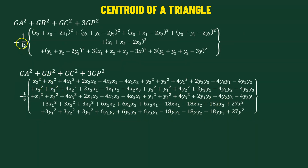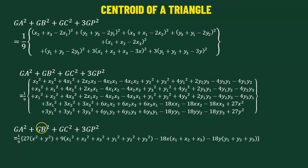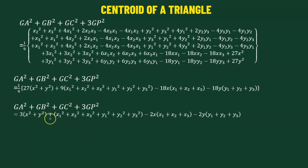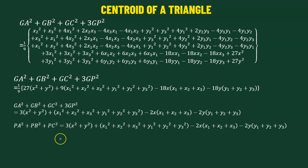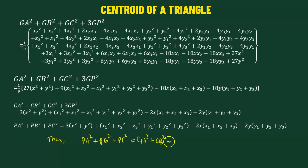After combining all like terms and dividing each term by 9, we get the expression: 3(x² + y² + x1² + x2² + x3² + y1² + y2² + y3²) − 2x(x1 + x2 + x3) − 2y(y1 + y2 + y3). This is the same expression we obtained for the left-hand side — PA² + PB² + PC². Thus we can say PA² + PB² + PC² = GA² + GB² + GC² + 3GP². Hence proved.